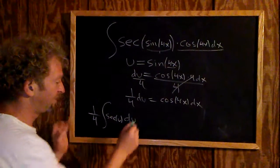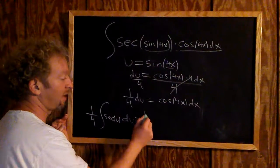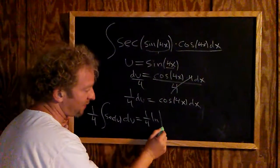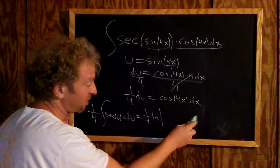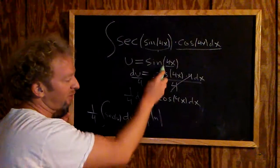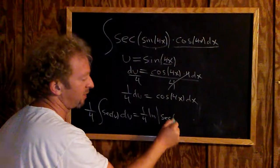When you integrate secant, with one-fourth out front, you get one-fourth natural log of the absolute value of secant plus tangent of u. But u is sine 4x, so it will be secant of sine 4x.